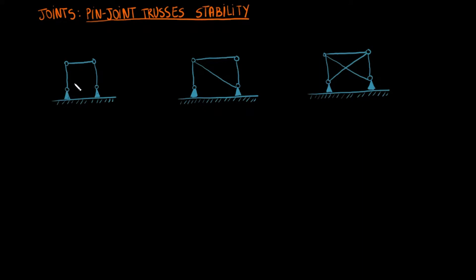Let's look at three simple pin joint truss systems. In pin joint trusses, the unknowns tend to be reaction forces. Since the members can rotate freely at the joints, they cannot resist moments. Thus, we will not have moments as our unknowns.